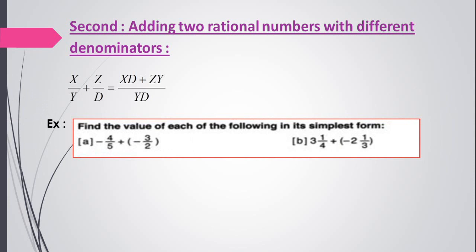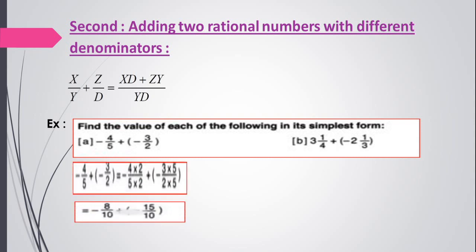For example, find the value of each of the following in its simplest form. Letter a: negative 4 over 5 plus negative 3 over 2. We don't have the same denominators, so we make them equal by multiplying the first rational number up and down by 2, and the second up and down by 5. It becomes negative 8 over 10 plus negative 15 over 10. Same sign, then add: the answer is negative 23 over 10, or in mixed fraction form, negative 2 and 3 over 10.